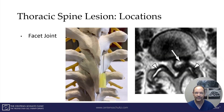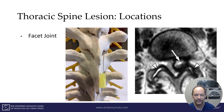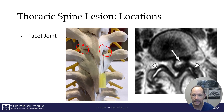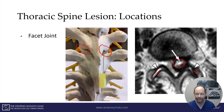A thoracic facet is also a location where you can have a lesion. The facet is where the superior articular process and the inferior articular process come together. It's shown here from a posterior view with a needle in it. At each level of the thoracic spine there is a facet joint on the left and a facet joint on the right. Here in this cross section you can see this patient has a synovial cyst being extruded from the facet joint — that can also be reported as a lesion.